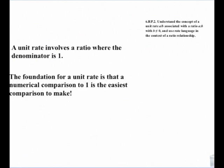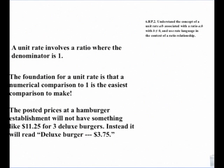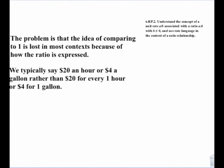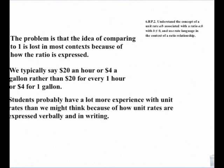A unit rate involves a ratio where the denominator is 1. The foundation for a unit rate is that a numerical comparison of 1 is the easiest comparison there is to make. If you went to a hamburger place, the posted prices wouldn't say $11.25 for 3 deluxe burgers — instead it would read 'deluxe burger, $3.75,' with the understanding that it's $3.75 for one deluxe burger. The idea of comparing to 1 is lost in most contexts because of how the ratio is expressed. We typically say '$20 an hour' or '$4 a gallon' rather than '$20 for every one hour' or '$4 for one gallon.' Students probably have a lot more experience with unit rate than we give them credit for, because of how unit rates are expressed verbally and in writing.